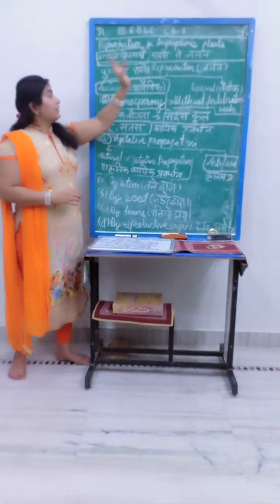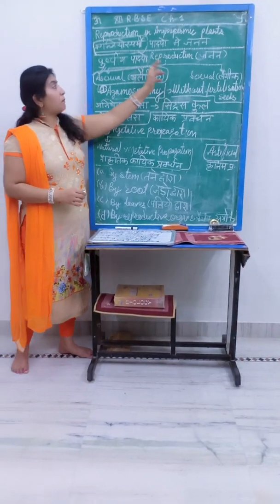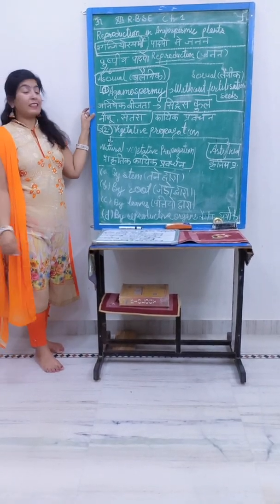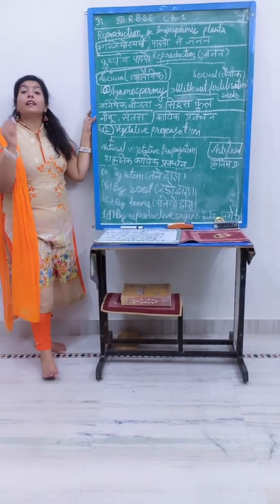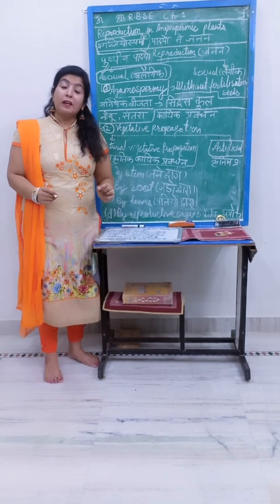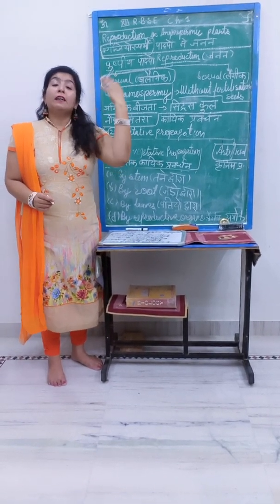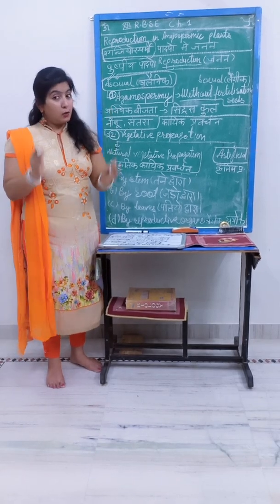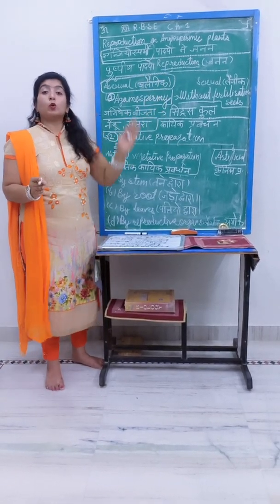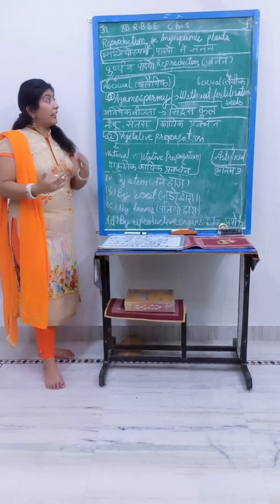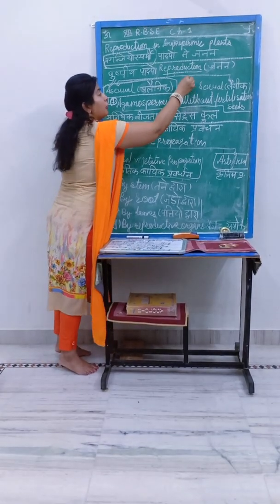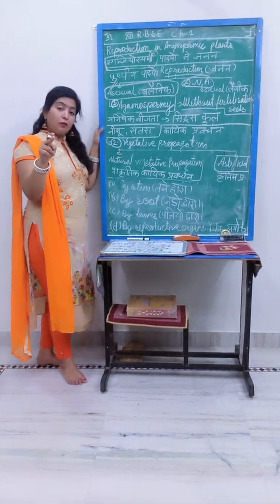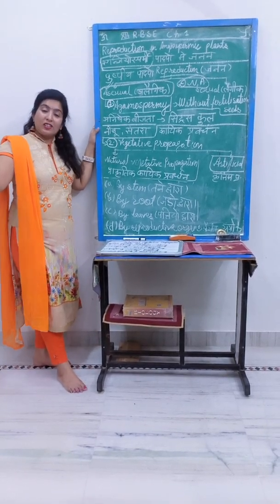Now we come to reproduction in Angiospermic Plants. The first topic is: what is reproduction, and why is it necessary? Reproduction is a process required for the development of a new organism that is similar to the parent. This similarity is due to DNA, because DNA contains genetic information that is carried on to the next generation.